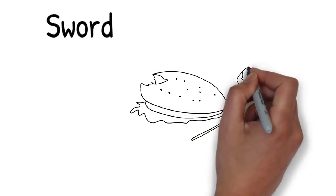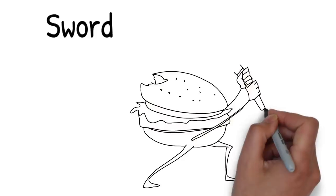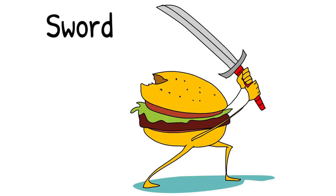The hamburger grows arms and legs and tries to escape from the flower. It pulls out a large gleaming sword and starts swinging it wildly in the air. The sword is razor sharp and dangerous.